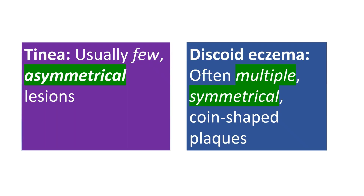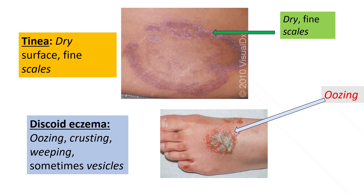Tinea tends to be asymmetrical, but discoid eczema can be multiple and symmetrical. Tinea is mostly dry and scaly; discoid eczema often oozes or crusts, especially in the acute phase, and may have small vesicles too. Features of eczematization may also be present in chronic untreated cases.